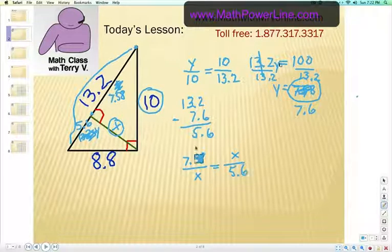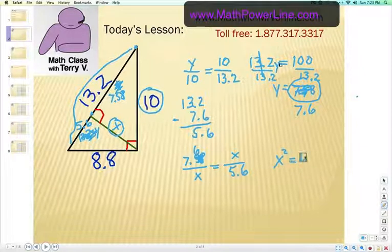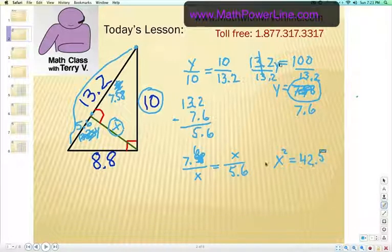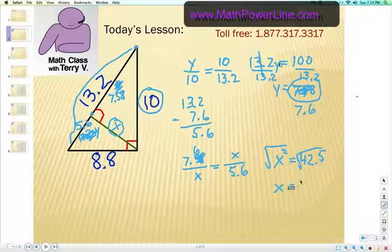Let's go ahead and cross-multiply, that'll give us x squared equals about 42.5. We are going to take the square root of both of those sides. Our unknown altitude is going to be 6.5238. It depends on how accurate we want to be, let's call it 6.5.